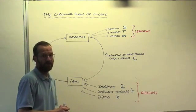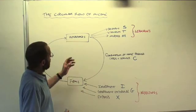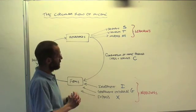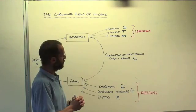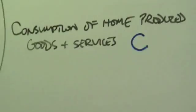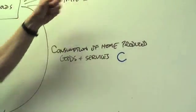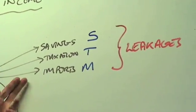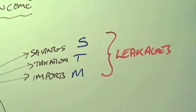From that income, households can only do four things. They can either spend it on goods and services which are produced in the UK - we call that consumption - or they can save it, that's called savings, taxation T, or spend it on imports, which is M.